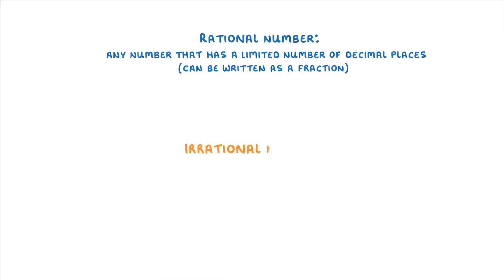So to sum up this video, a rational number is basically any number that has a limited number of decimal places and can be written as a fraction, whereas irrational numbers are those that continue on forever, and so to write them down, we always have to round them.